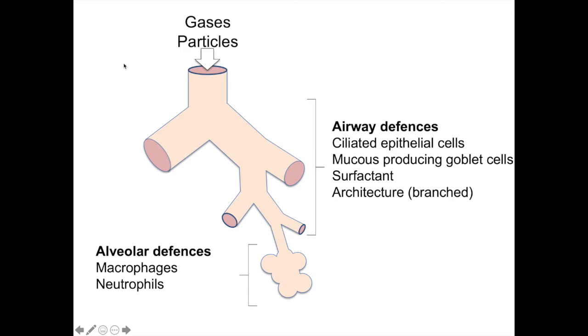Swallowed mucus then gets destroyed by stomach acid. In addition, immune cells surround the alveoli, such as macrophages and neutrophils, and these can phagocytose and destroy any particles which make their way down that far.